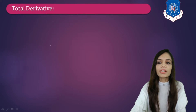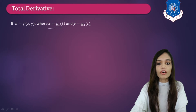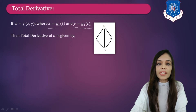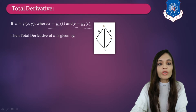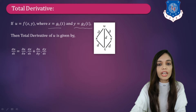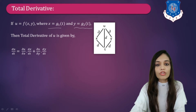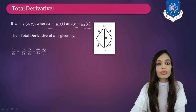Next, let us discuss the total derivative. If U is a function of X and Y, where X is a function of T and Y is also a function of T, let us make a tree diagram. U is a function of X and Y, and X and Y are functions of T — one variable, so we put d. The formula of dU/dT will be ∂U/∂X into dX/dT plus ∂U/∂Y into dY/dT.